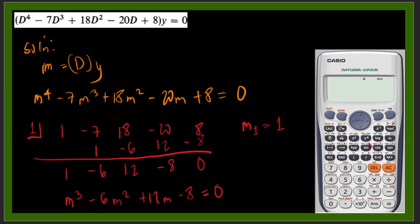We have our calculator. We go to equation, that will be 5, 4. So we have 1, negative 6, 12, and negative 8.